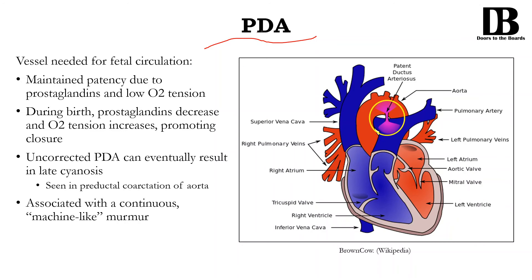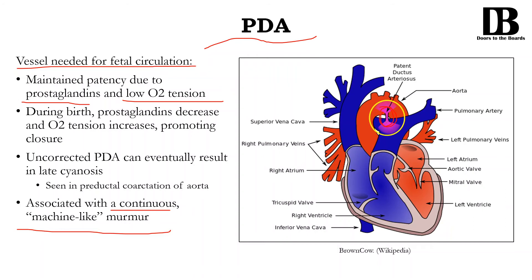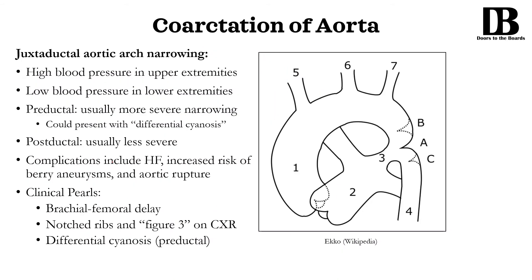Next up we have patent ductus arteriosus, and one thing they really like to know — a very common buzzword — is that it is associated with a continuous machine-like murmur. Recall that this is a vessel needed for fetal circulation. They like to ask questions about what would maintain patency of this ductus arteriosus as well as what would close it. An increase in prostaglandins and low oxygen within the systemic circulation is actually going to promote the maintained patency of your ductus arteriosus. While the opposite — prostaglandins decreasing and/or oxygen tension within the systemic circulation increasing — promote the closure of the ductus arteriosus. Sometimes you can develop something called late cyanosis, which I'd rather correlate with coarctation of the aorta.